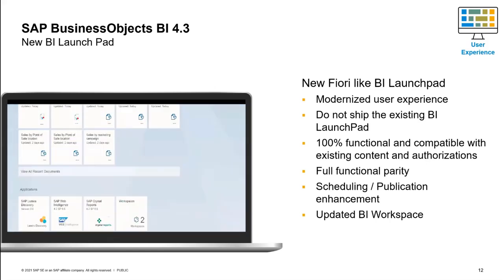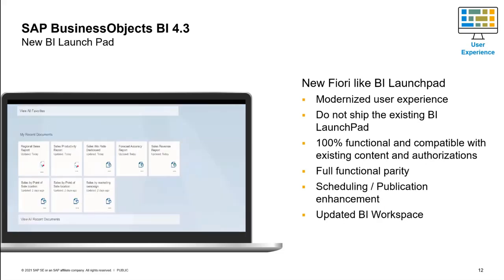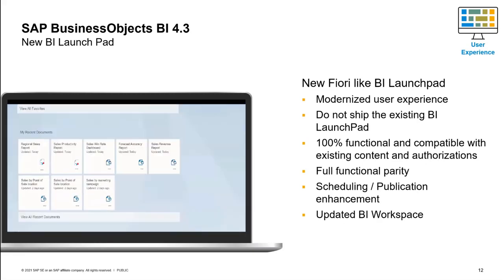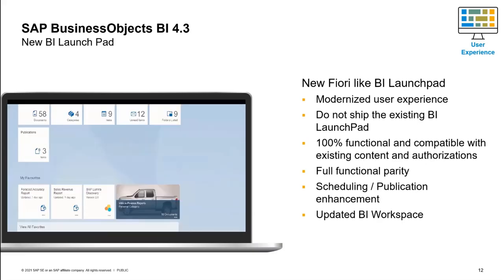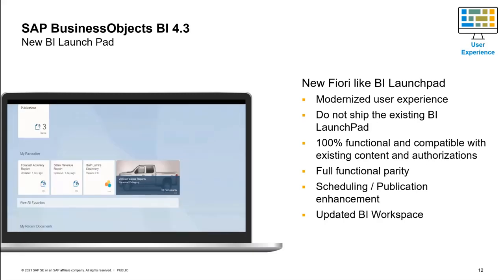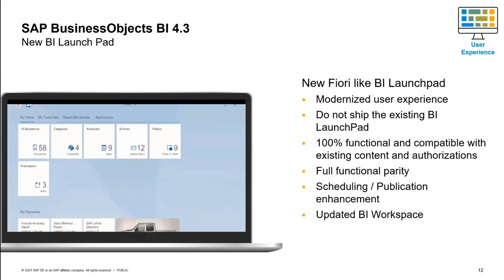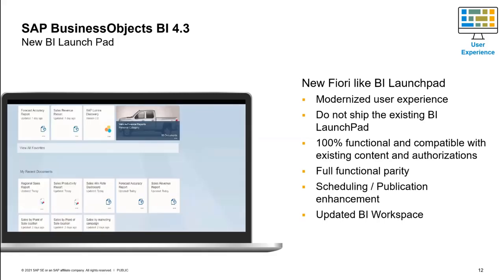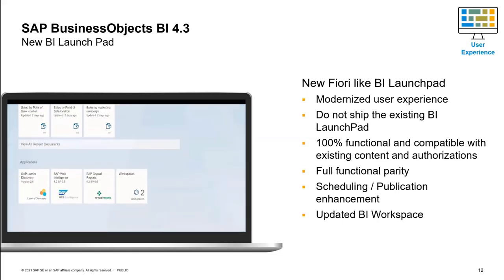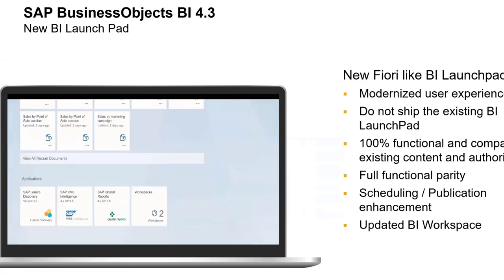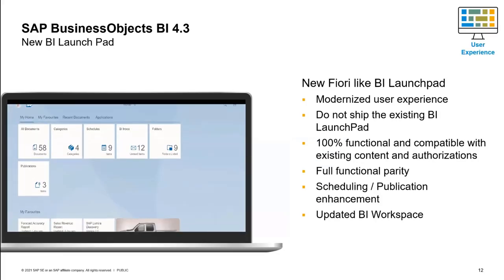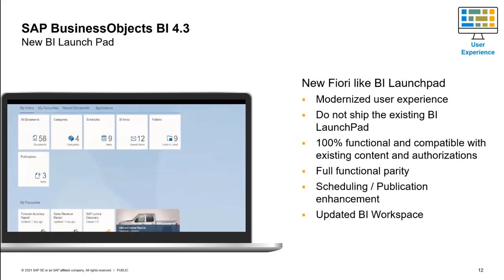First, we have a brand new BI Launchpad. Only the interface is new — all your existing content remains exactly the same. Your sizing, cluster, deployment, and services remain exactly the same. Going from 4.2 to 4.3 is just an update. With BI 4.3 you get a new BI Fiori Launchpad, which has almost exactly the same capabilities as 4.2 but inside a Fiori look and feel. The classic Launchpad from 4.2 will no longer be available in 4.3, and this new Launchpad is 100% functionally equivalent — full functional parity.